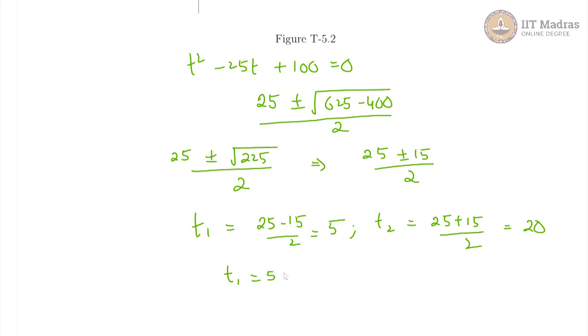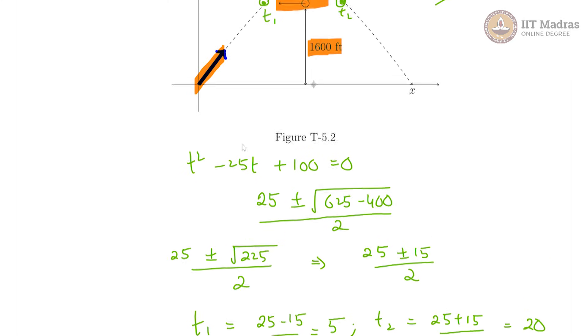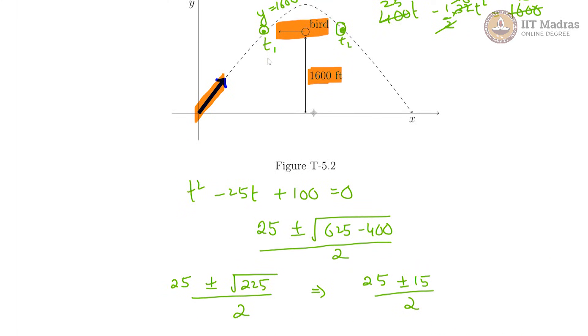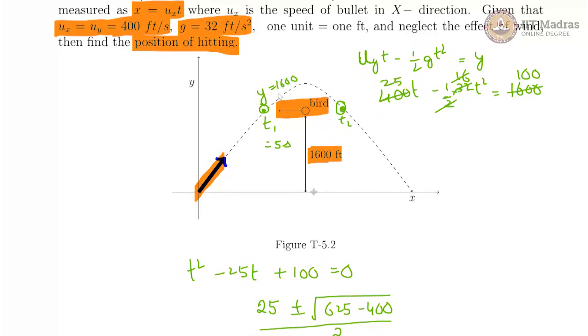Clearly, t1 equals 5 seconds is where our bullet will hit the bird. This is t1 equals 5 seconds and we already know the y coordinate of this place.